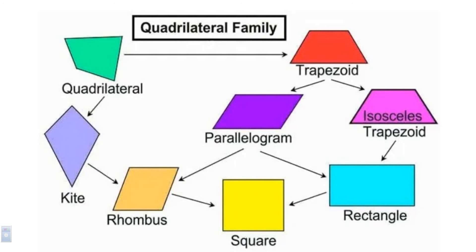A rhombus is to a parallelogram like a square is to a rectangle. A rhombus is a special type of parallelogram where all four sides are the same. So a rhombus is the cousin of both a parallelogram and a square — it's like a parallelogram because opposite sides are congruent, and it's like a square in that all the sides are the same.